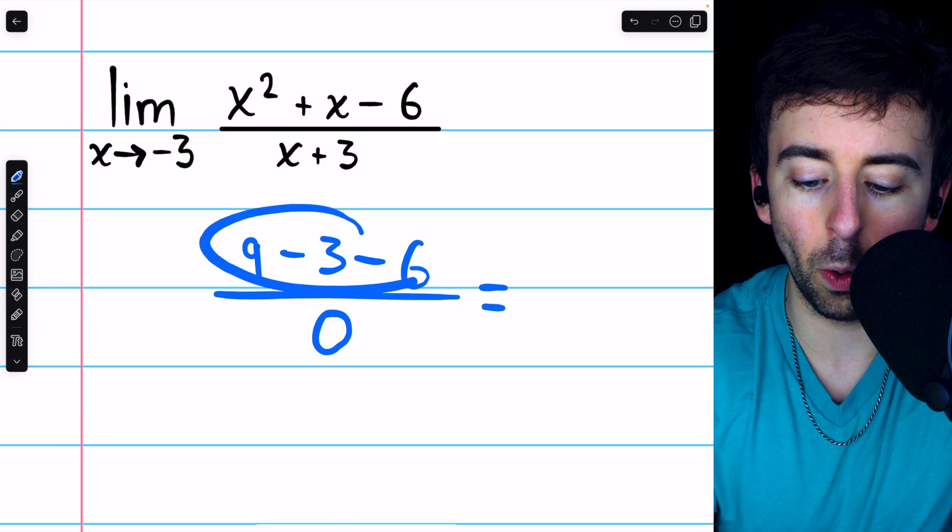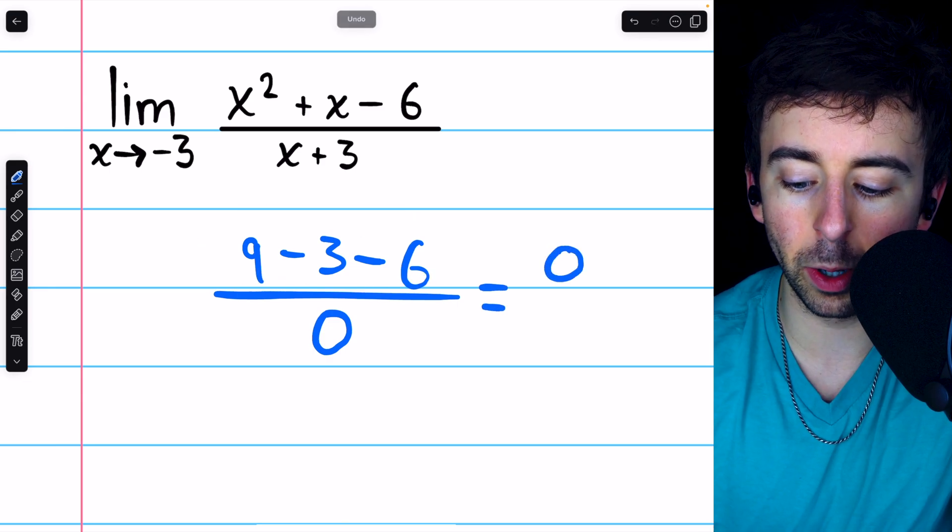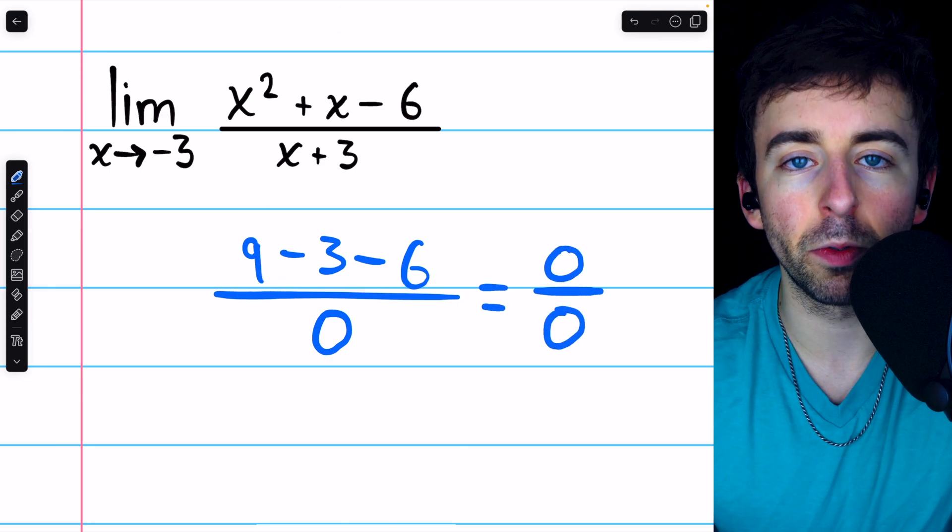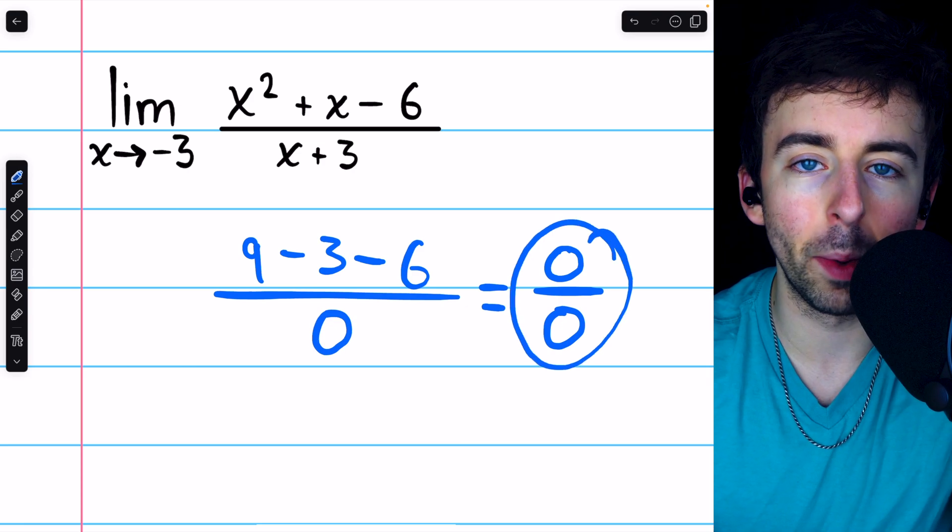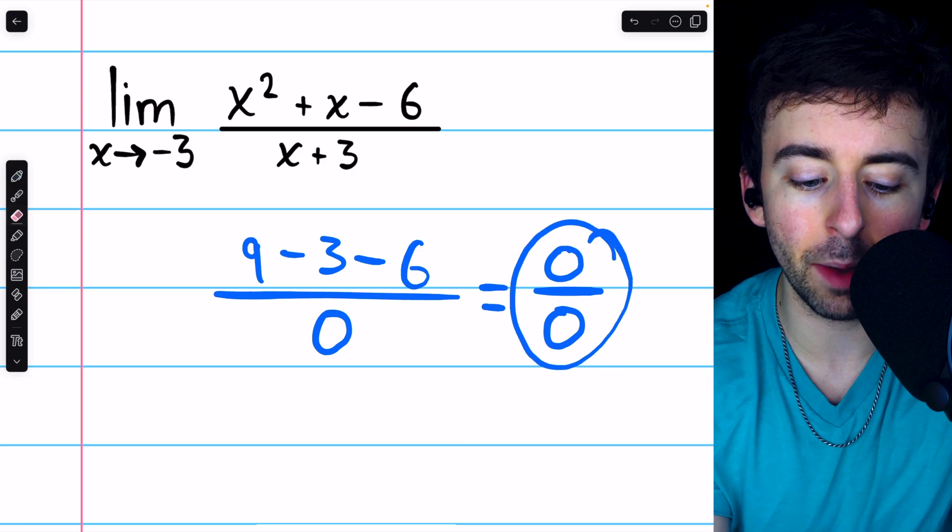And of course, if you do the arithmetic here in the numerator, it ends up being 0 over 0. This is indeterminate. It doesn't tell us anything about the limit.